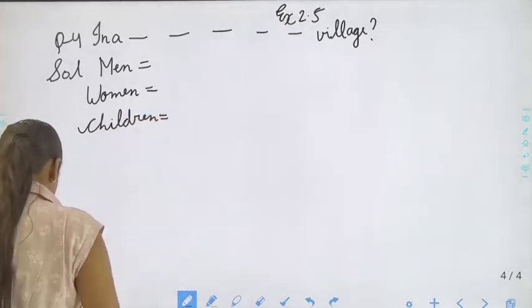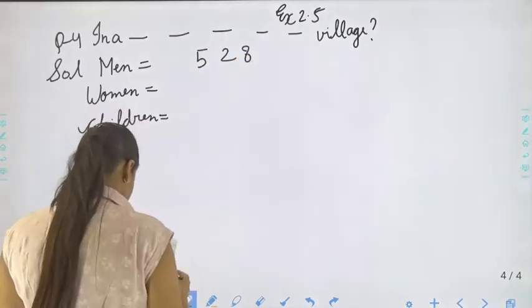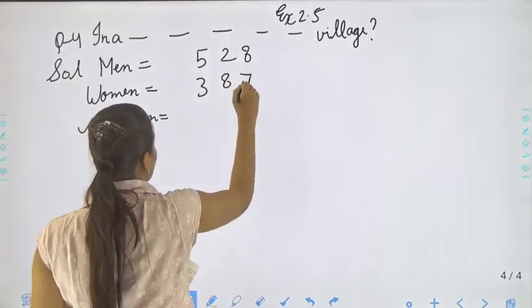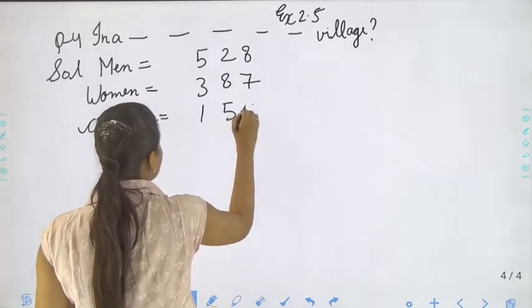Man equals to 528, Women equals to 387, and children equals to 159.